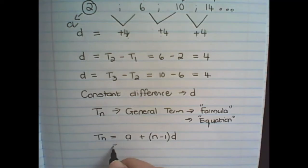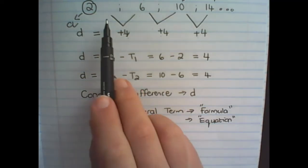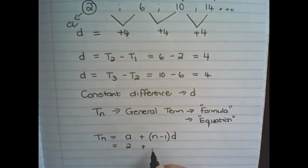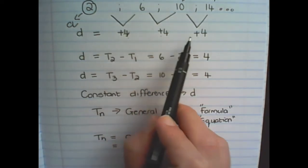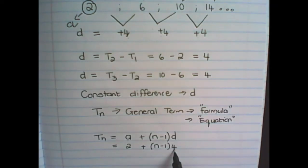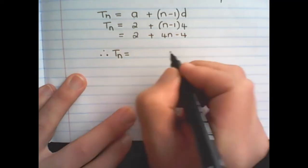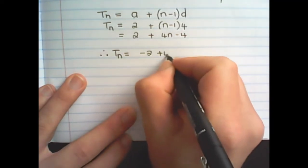So in order to find the general term, or the formula for this pattern, we substitute a with the value of 2. We don't need to find a value of n. And we know that the constant difference is positive 4. Now I can multiply out and simplify. Therefore, the general term of this pattern is negative 2 plus 4n.